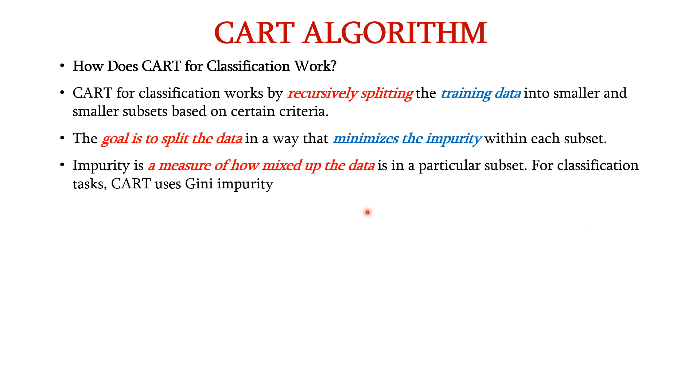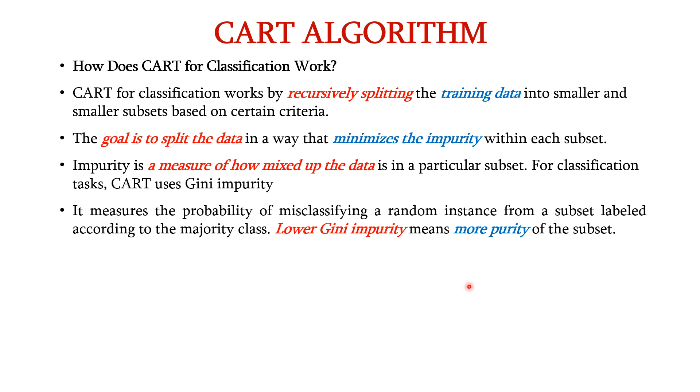Impurity is a measure of how mixed up the data is in a particular subset. For classification tasks, CART uses Gini impurity. This measures the probability of misclassifying a random instance from a subset labeled according to the majority class. Lower Gini impurity means more purity for the particular subset.